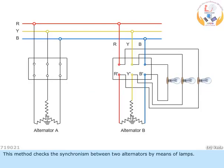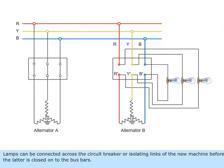This method checks the synchronism between two alternators by means of lamps. Lamps can be connected across the circuit breaker or isolating links of the new machine before the latter is closed onto the bus bars.